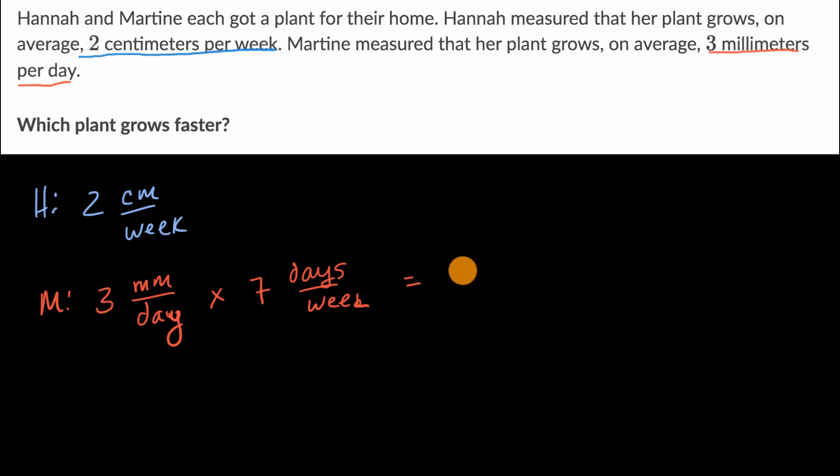that would get us three times seven, which is equal to 21 millimeters, millimeters in a week. And you could see actually that the units cancel out nicely like that. So you're left with millimeters a week. And that makes sense. Three millimeters a day, you're able to do seven times that in a week, 21 millimeters a week.